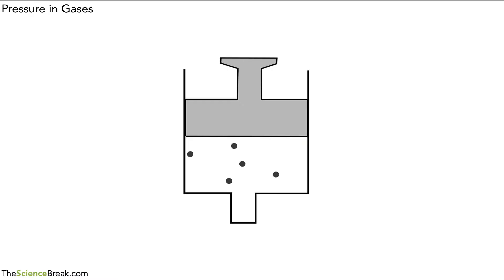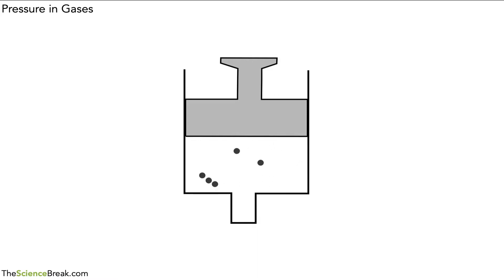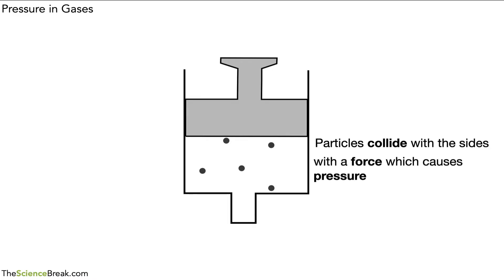Let's look at a slightly different example. Here we have a container with gas inside. We can see the particles as they move around in random directions, colliding with the inside walls of this container. In the same way as before, the particles collide with the sides with a force, which causes a pressure on the inside of that container.